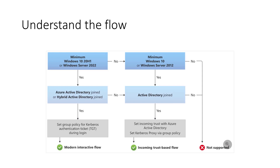There are two flows that you can use: either the modern interactive flow or the incoming trust-based flow, based on the client machine the customer is trying to connect. You have to establish one of these workflows — all the steps are documented. You can create the Kerberos proxy for the Windows client machines with Azure Active Directory and start connecting to the Managed Instance.